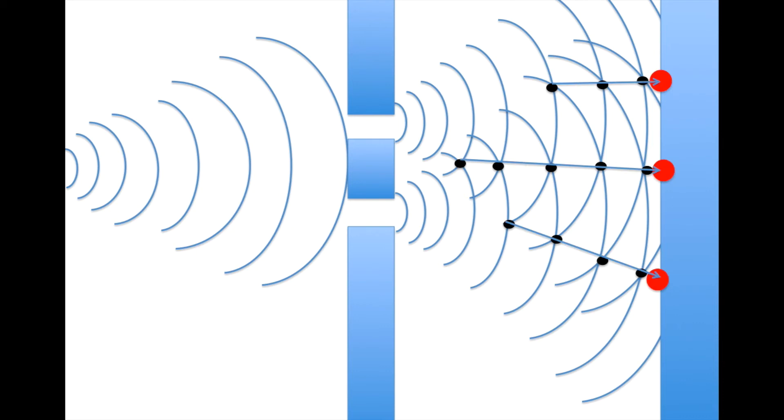So as you can see, the light waves go through the slits. And there are certain points where they overlap. I'm marking them with the black dots and those form interference patterns as marked with the red dots.